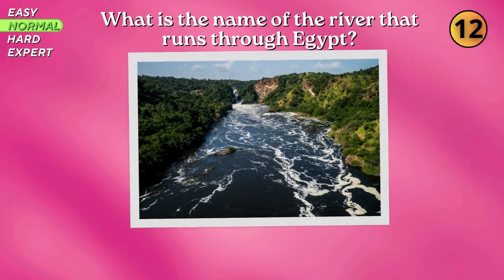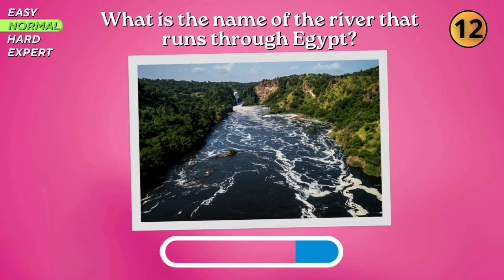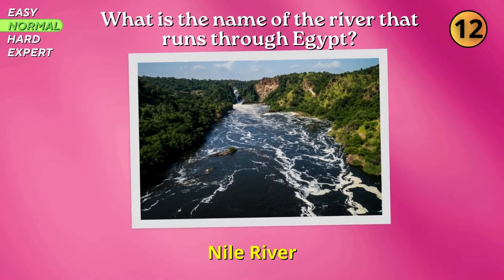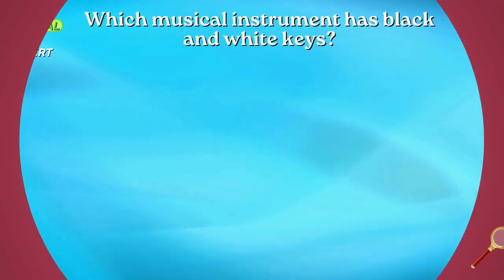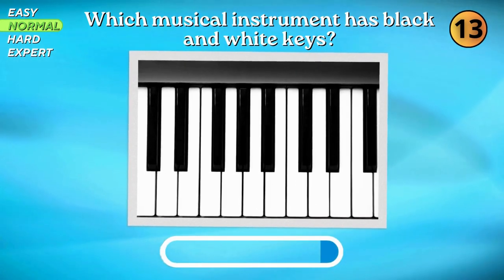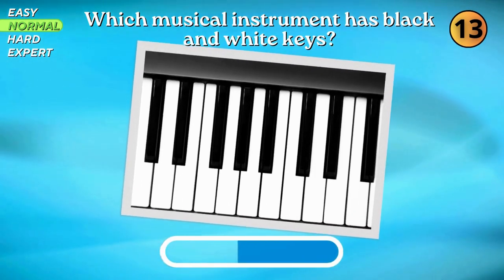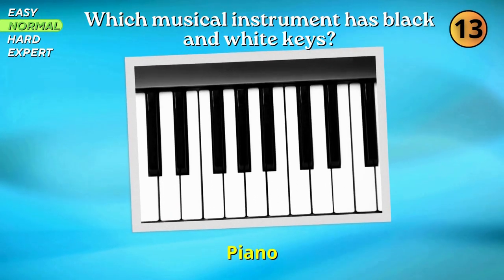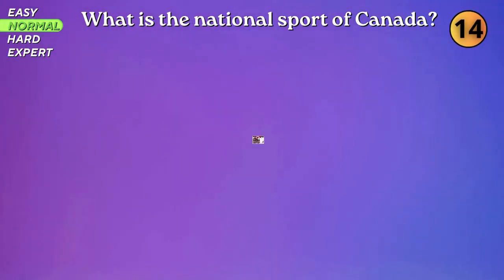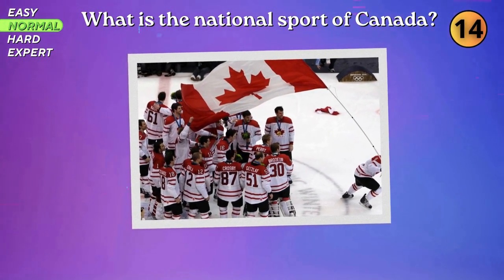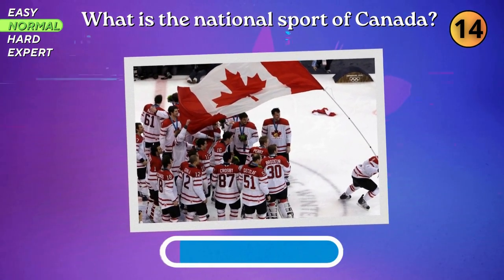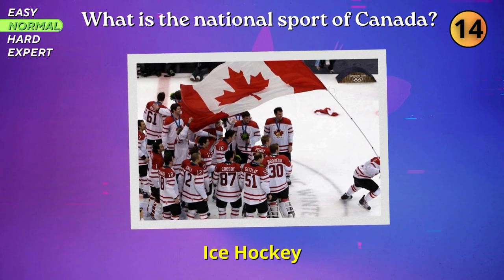What is the name of the river that runs through Egypt? Nile River. Which musical instrument has black and white keys? Piano. What is the national sport of Canada? Ice hockey.